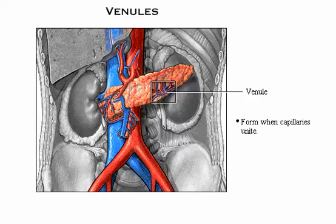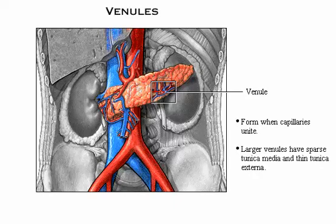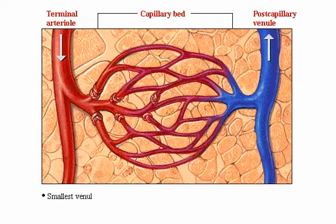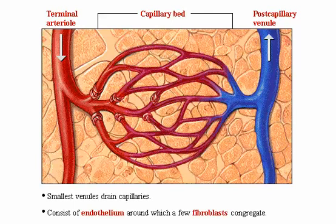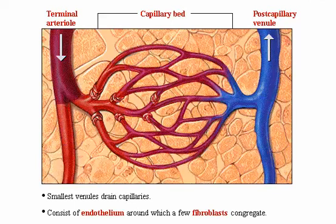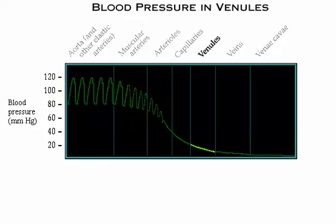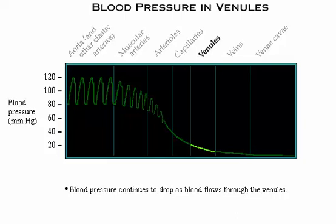Venules are formed when capillaries unite. In larger venules, both the sparse tunica media and a thin tunica externa are present. The smallest venules, which drain capillaries, consist entirely of endothelium around which a few fibroblasts congregate. In the graph of blood pressures, note that pressure continues to drop as blood flows through the venules, encountering further resistance.